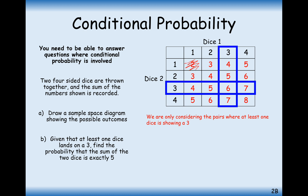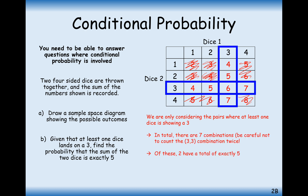We can ignore the outcomes where neither dice shows a three — ignoring these ones here. So what is the probability that the total sum is exactly five? In two of those seven cases the sum was exactly five, so the probability is 2 out of 7.